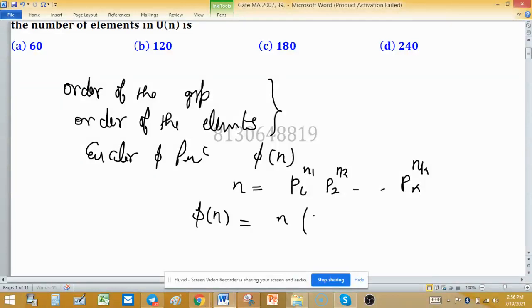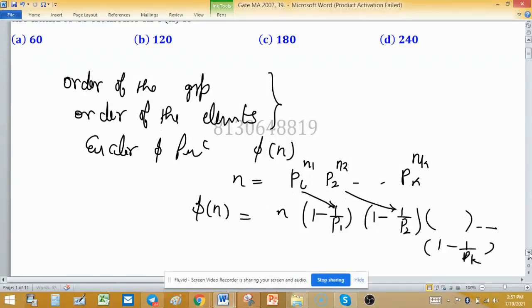Can we find out: n into (1 - 1/p₁), use this one, and (1 - 1/p₂), use this one in this bracket, and so on up to (1 - 1/pₖ). To solve Euler phi function, we will use this formula.